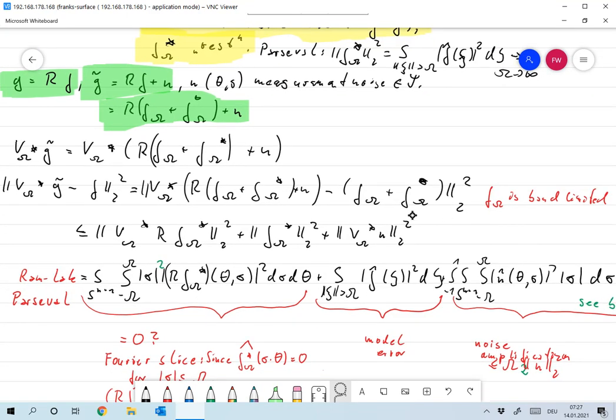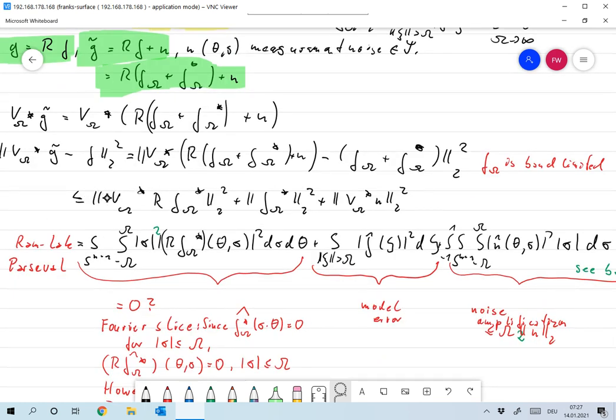Keep in mind that f_omega is band limited, and for band limited functions v_omega star Rf_omega is the same as f_omega. So this one goes away.